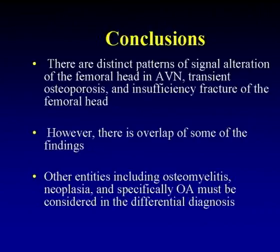In conclusion, we have described distinct patterns of signal abnormality of the femoral head in AVN, in transient osteoporosis, and in insufficiency fractures of the femoral head. However, there is overlap of these various signal abnormality patterns, and we've got to be aware of other entities including osteomyelitis, neoplasia, and specifically osteoarthritis. These should be considered in the differential diagnosis. Thank you very much.